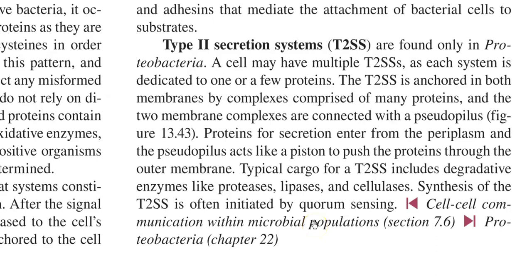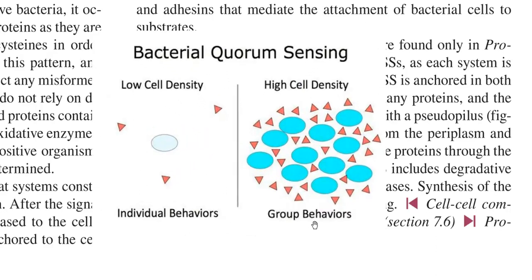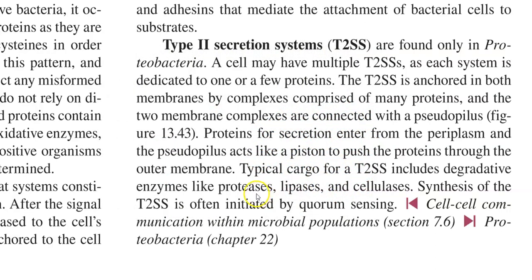The proteins secreted through Type 2 secretion systems include degradative enzymes such as proteases, lipases, and cellulases. The synthesis of Type 2 secretion systems in bacteria is initiated by the quorum sensing mechanism — that is, when a population of bacteria builds up in a locality and needs a special enzyme, its synthesis and secretion system will be expressed via quorum sensing.